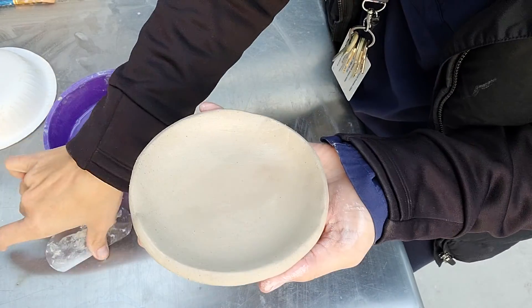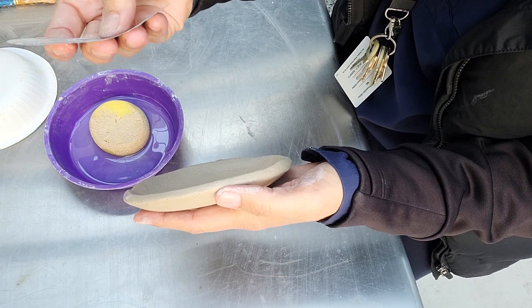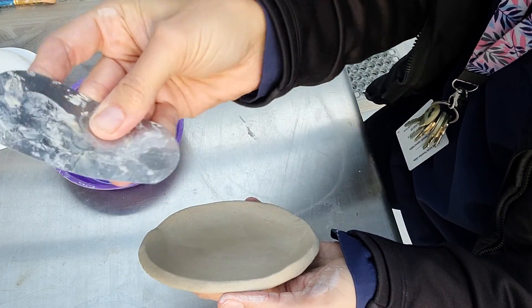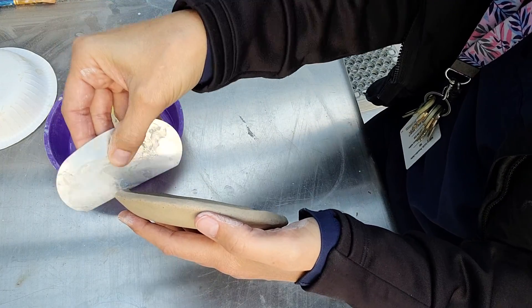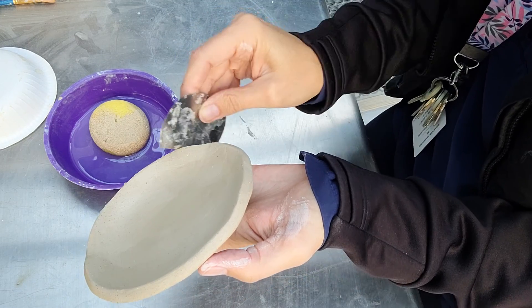Another tool, if your clay is firm enough, is the metal or wood rib tools. Just holding it like you would a credit card and rubbing it on this outside edge over and over is going to help shave down any kind of bumps and bruises that occurred from the cutting process.